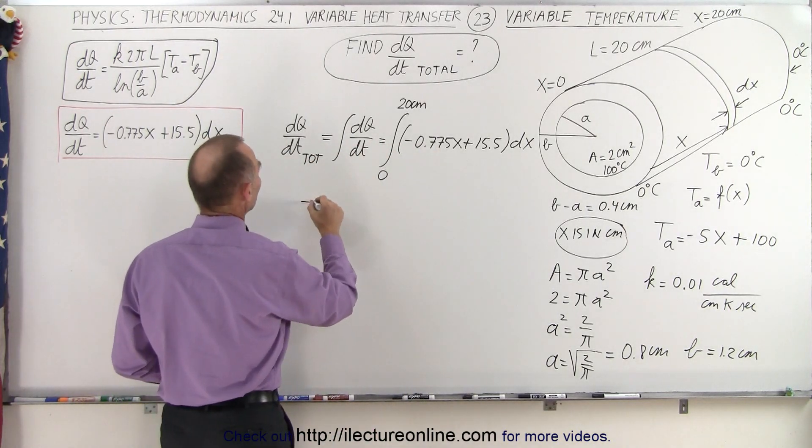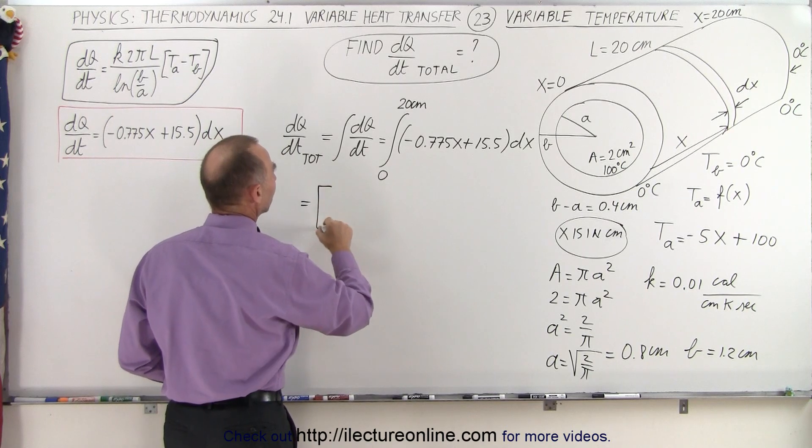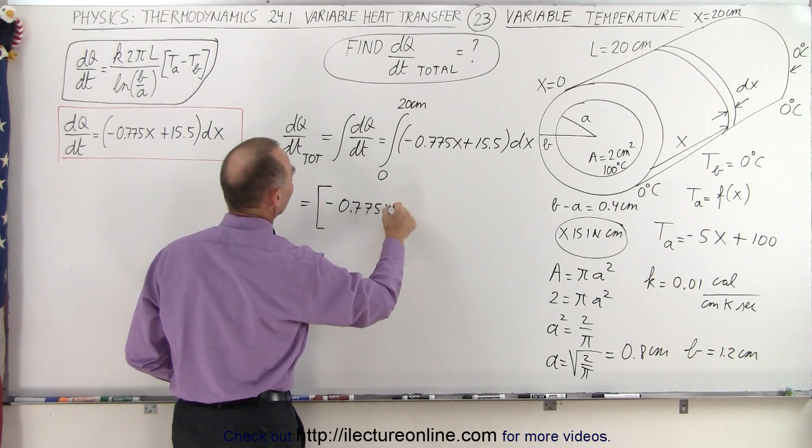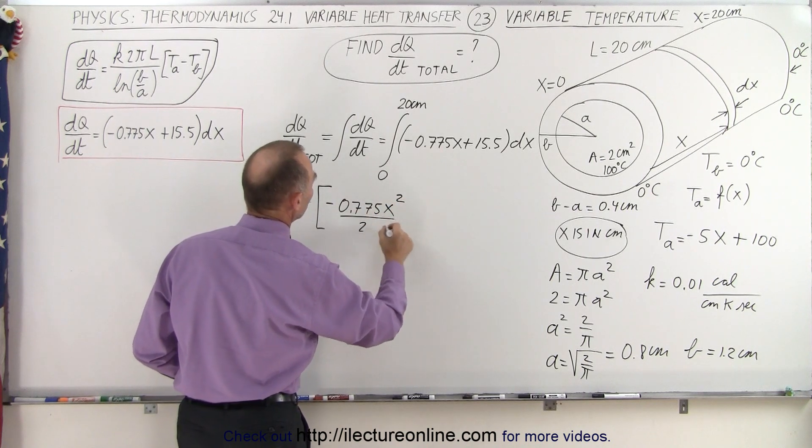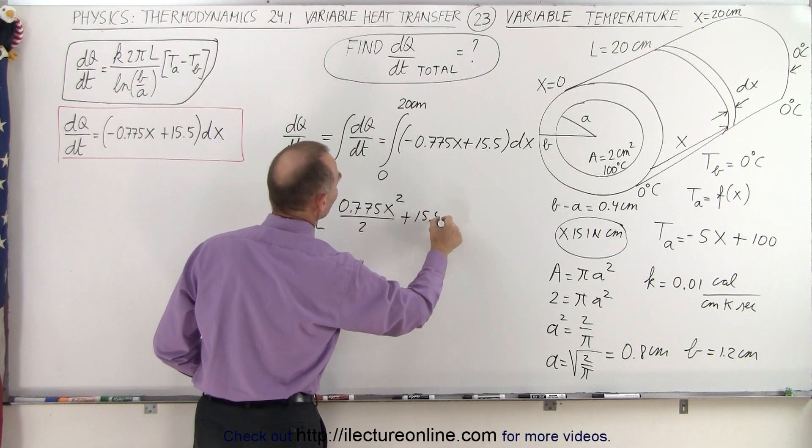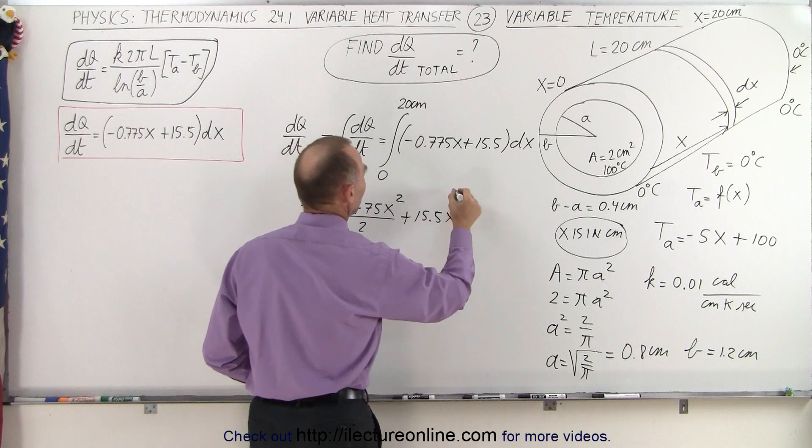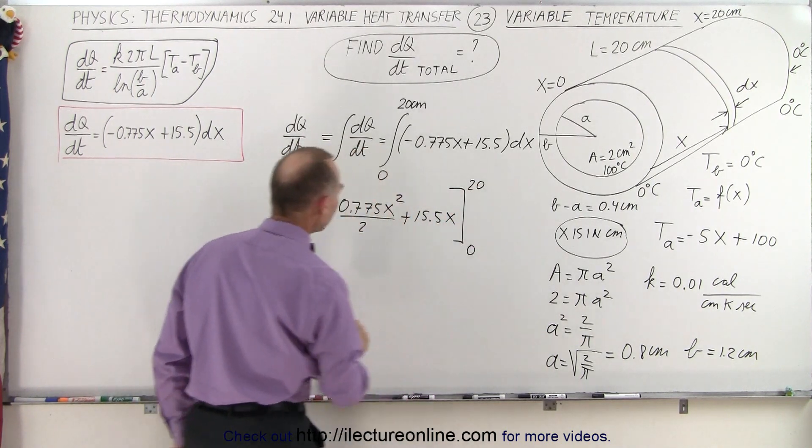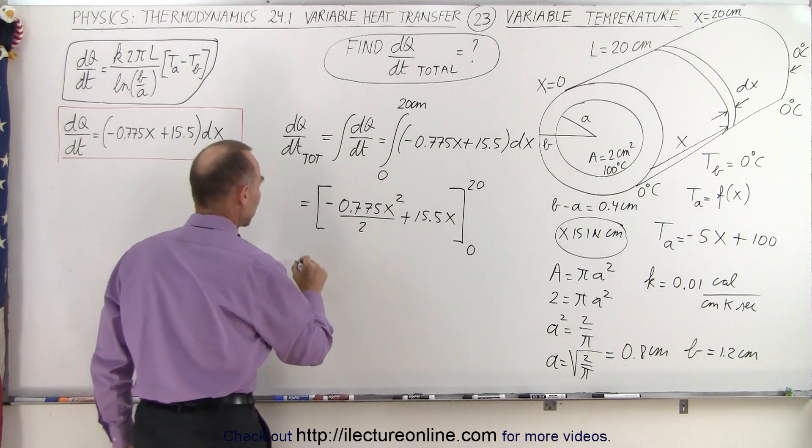Let's go ahead and integrate that, so this becomes equal to minus 0.775x squared divided by 2 plus 15.5x, and then we're going to evaluate that from 0 to 20.